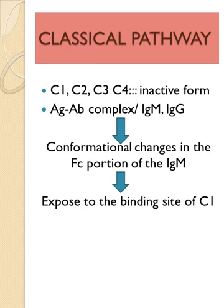The first is the classical pathway. The classical pathway has molecules C1, C2, C3, and C4, all present in inactive form. When cleaved, they give rise to two fragments each: C1a/C1b, C2a/C2b, C3a/C3b, C4a/C4b. Now, how do they become active? Whenever there is an antigen-antibody complex — specifically involving IgM or IgG — it helps in conformational changes in the Fc portion of IgM, where antigen interacting with IgM causes IgM to undergo conformational changes.